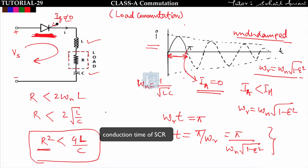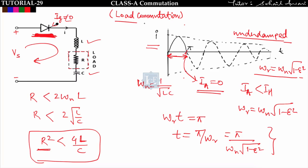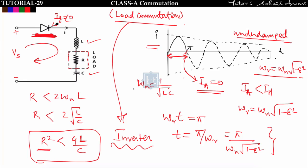In this way we can turn off the SCR by making the circuit work in the under-damped condition. If the circuit is not under-damped, the current won't alternate positive and negative, so the SCR will not turn off. The zeta must lie between 0 and 1. This is Class A commutation — load commutation — and its application is used in inverters when an RLC load is connected.